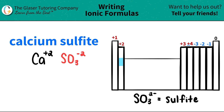Now we're ready to crisscross. Once you get the charges, we're going to use these charges and crisscross them to find out how many of each we need. So this plus two crisscrosses down to the sulfite, telling me that I need two of those. And this negative two crisscrosses down telling me that I need two calciums.